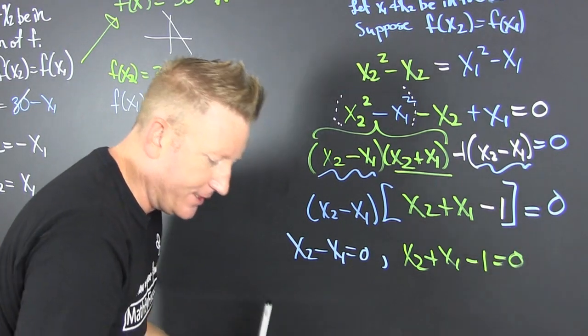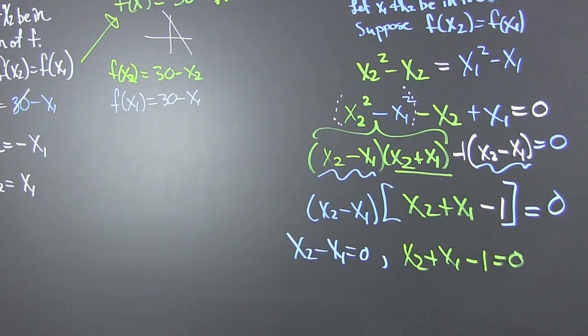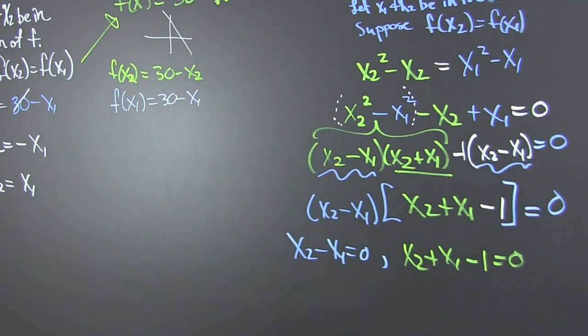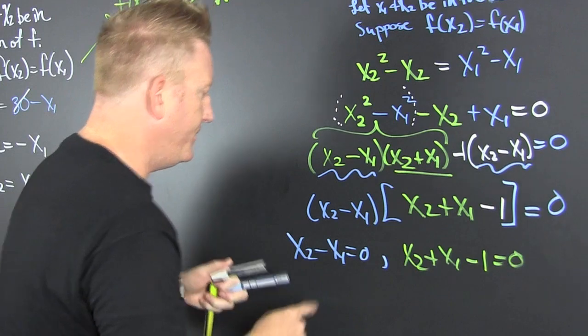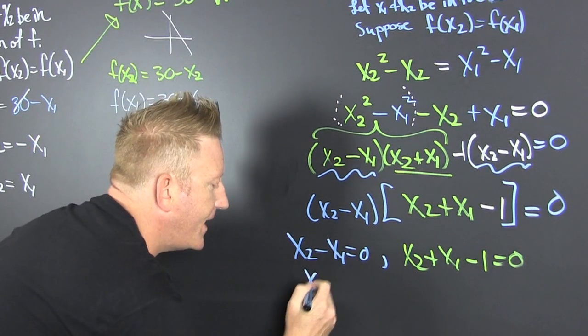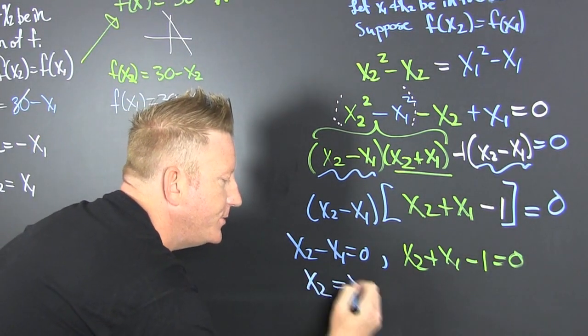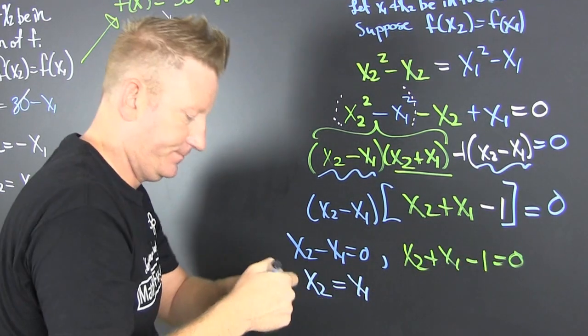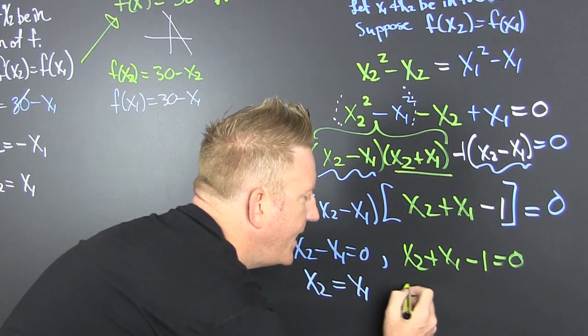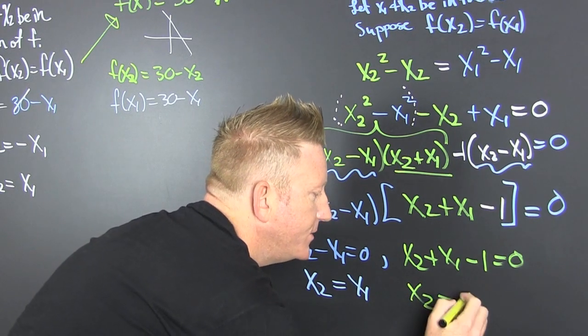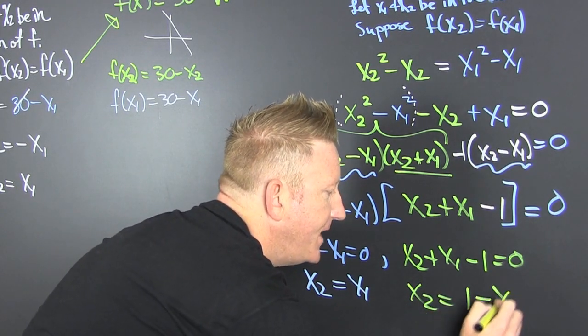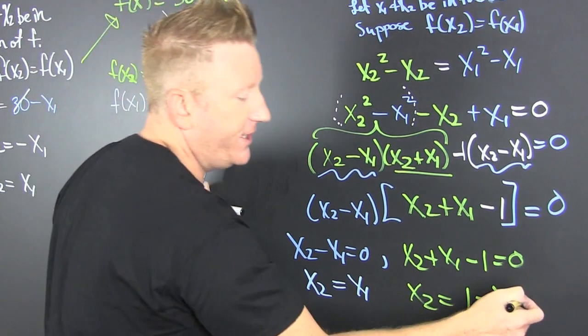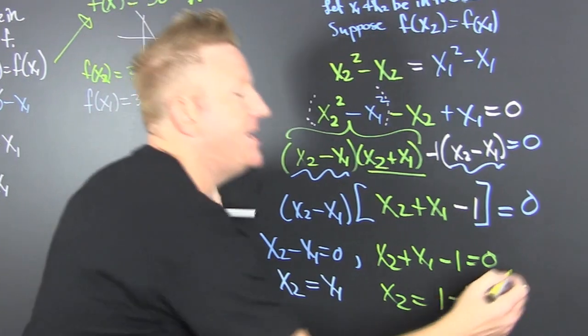Sure. Here I have that x2 is equal to x1. All right. That's cool. But over there, I have that x2 is equal to one minus an x1. Now, since I have that value over here, this one here says it's not.